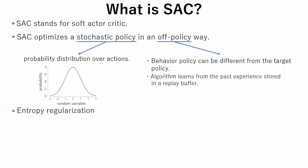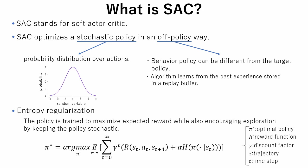The central feature of SAC is entropy regularization. The policy is trained to maximize expected reward while also encouraging exploration by keeping the policy stochastic. At each time step, the agent gets a bonus reward proportional to the entropy of the policy at that time step.